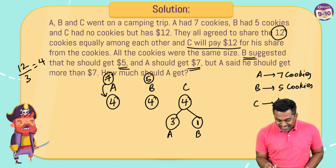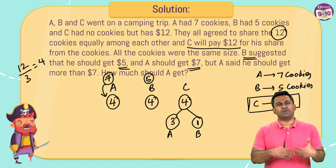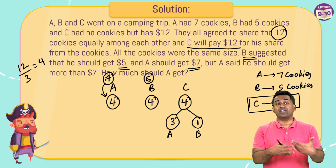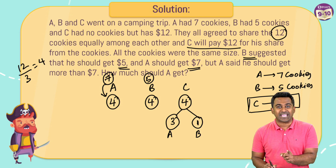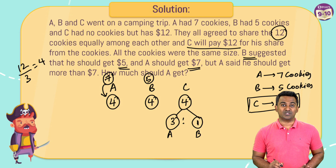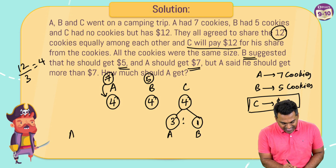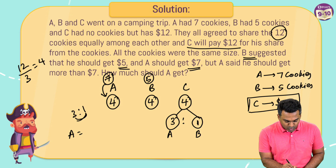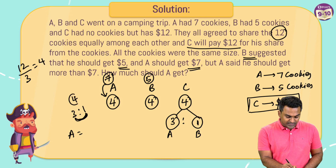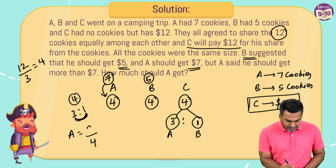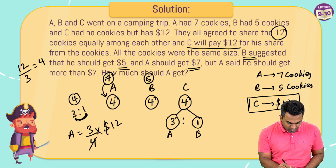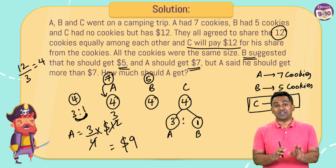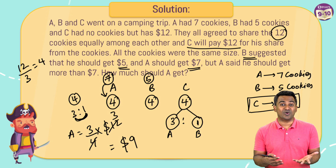Whoever gave more cookies gets a larger share of the dollars. So the twelve dollars will be divided between A and B in the ratio three to one. Total parts are four, so A gets three-quarters of twelve dollars — that's nine dollars — and B gets the remaining three dollars.